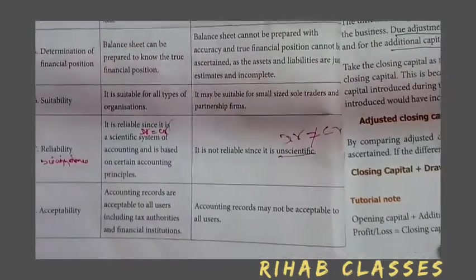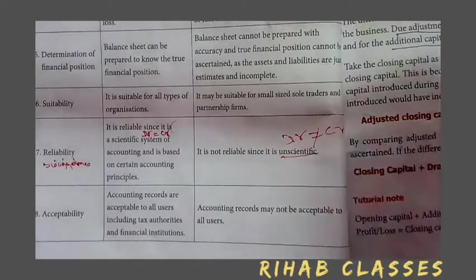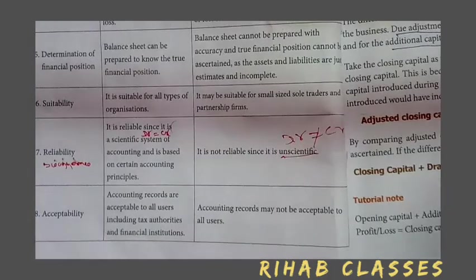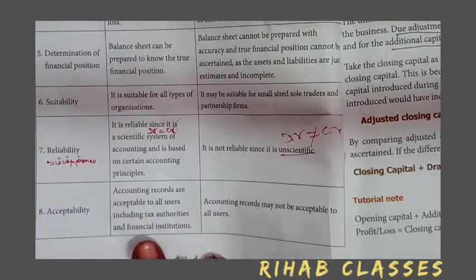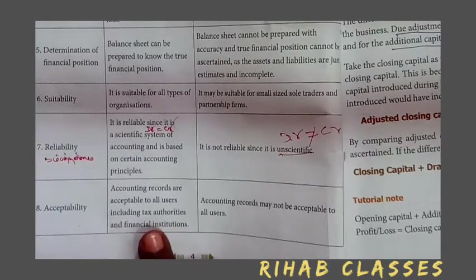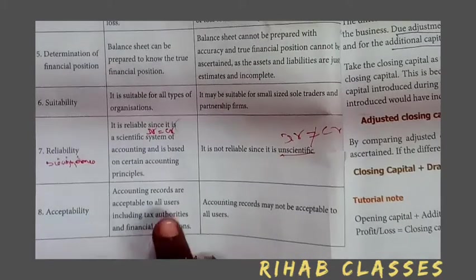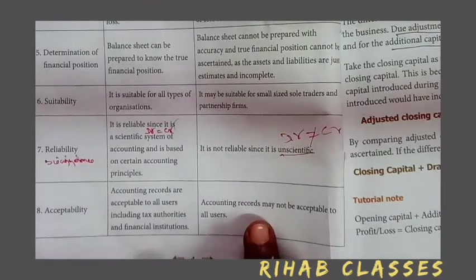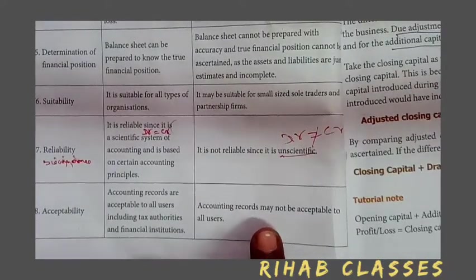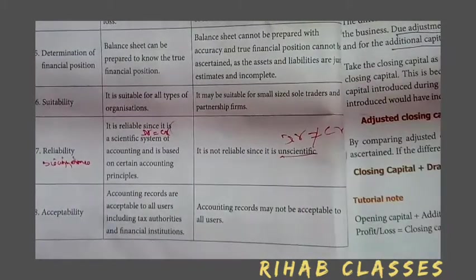The next basis is acceptability. The double entry system is accepted by financial institutions and tax authorities because accounts are fully and properly recorded. In the single entry system, it may not be accepted by banks, financial institutions, and tax authorities. I hope you understand. Thank you for watching.